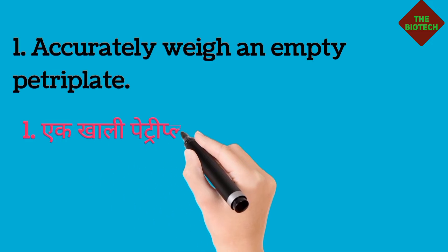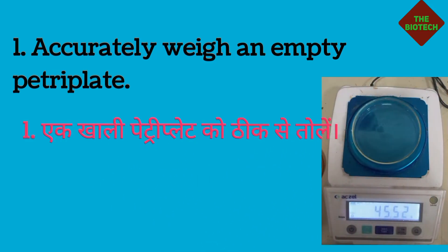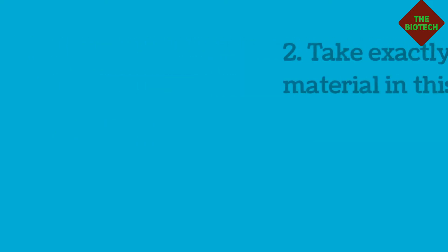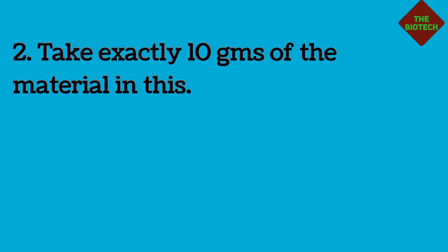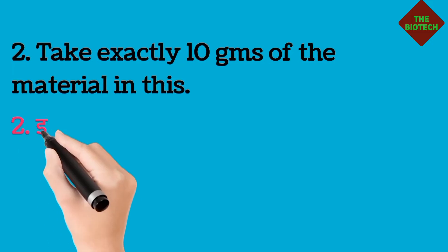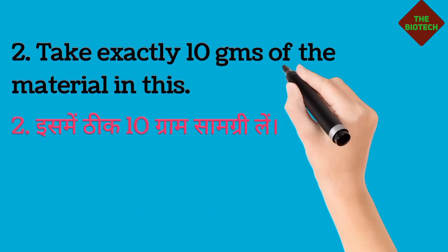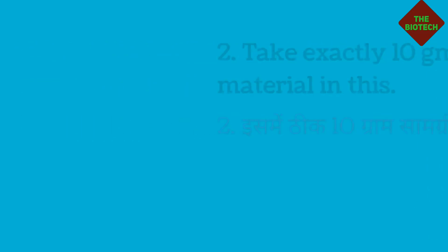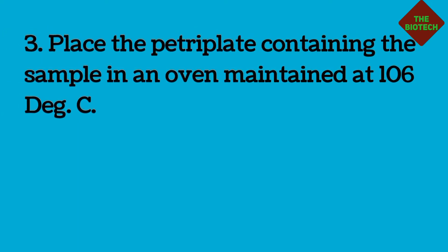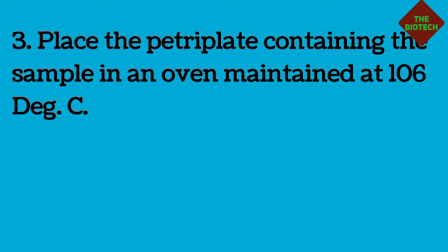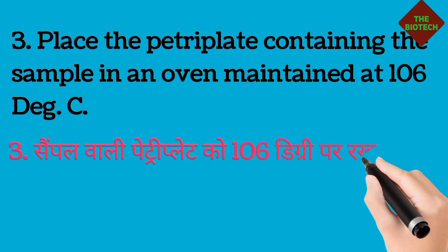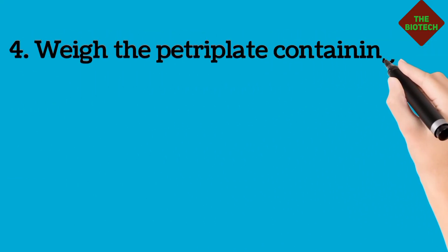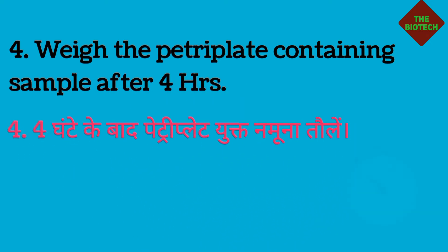Accurately weigh an empty petri plate. Take exactly 10 grams of the material in this. Place the petri plate containing the sample in an oven maintained at 106 degrees C. Weigh the petri plate containing the sample after 4 hours.